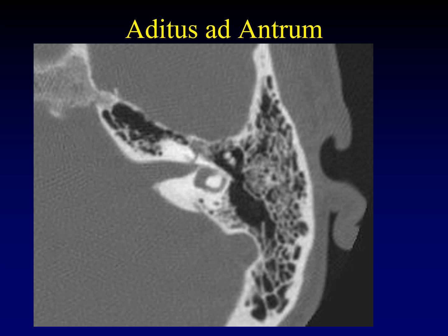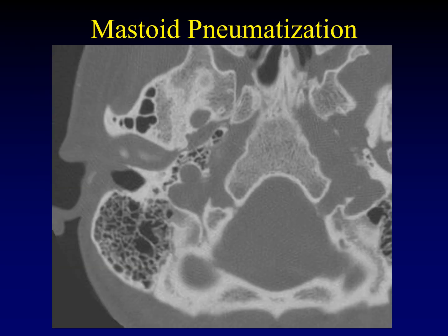The mastoid air cells include the mastoid antrum as the largest, situated right behind the epitympanum. The small passage between the epitympanum and mastoid antrum is the aditus ad antrum (Latin for 'doorway to the antrum'), an important anatomic reference point. Mastoid air cells pneumatize to a variable degree — some people have very few, others extensive pneumatization extending to the zygomatic arch base, medially into the petrous apex, and throughout the mastoid. This variability becomes important when chronic inflammation causes the air cells to shrink with withdrawal of surrounding bony structures.